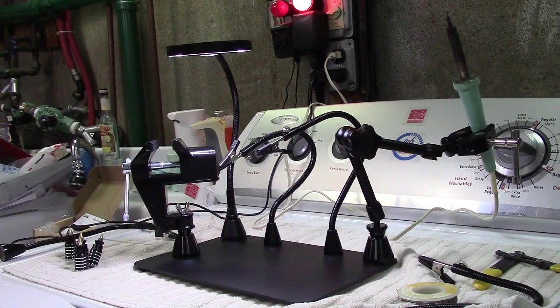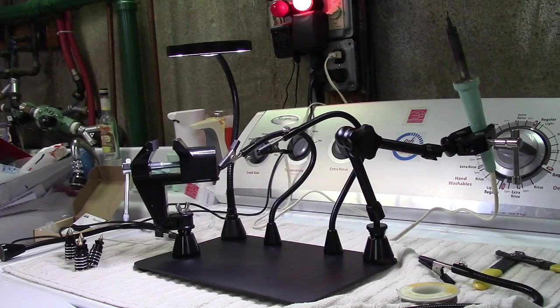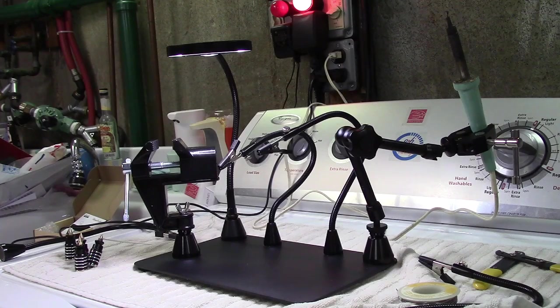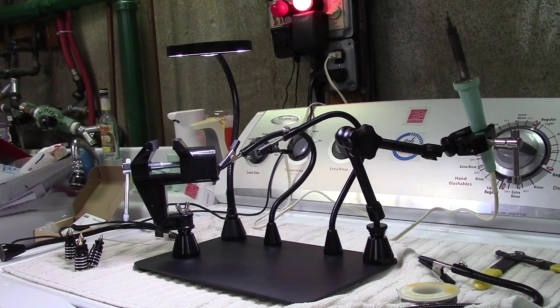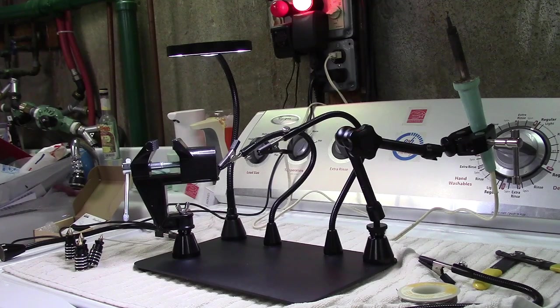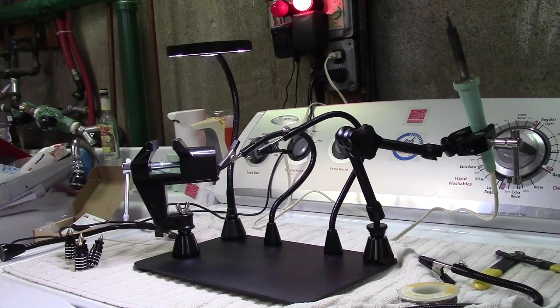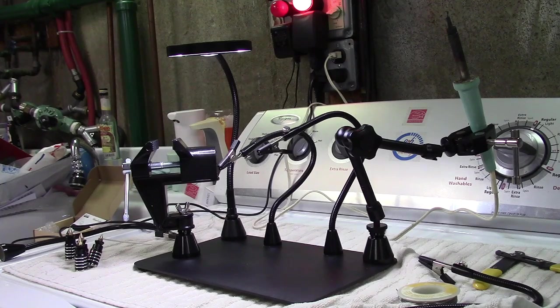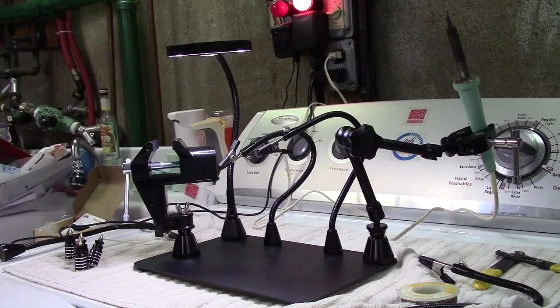So, once again, this was the NOEV's Big Magnetic Helping Hands Soldering Station with Lamp. If you'd like to purchase this item, I'll leave a link in the video description where you can find the item available for sale on Amazon. Thanks for watching. Make sure you click like. Make sure you click subscribe. And take care. We'll see you next time.